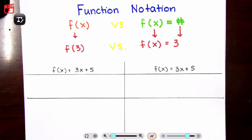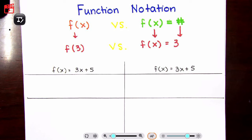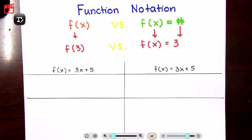Hello, beautiful people and welcome. In this video, we are talking about function notation and the difference between function notation. The two that we are going to be talking about is f of 3 or f of x, and f of x equals 3 or f of x equals some sort of number. These two are different.